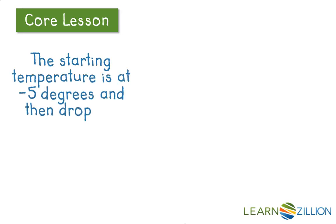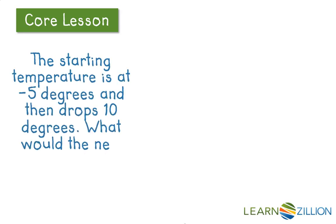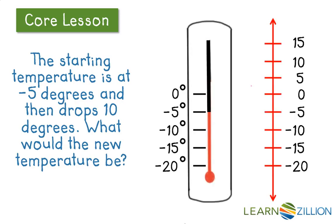Suppose you're looking at a thermometer and the starting temperature is at negative 5 degrees and then drops 10 degrees. What would the new temperature be? So we're at negative 5. If we're dropping the temperature, we're going down. Go down 5, another 5 for 10, and we land at negative 15 degrees. We could do the same thing on the vertical number line.